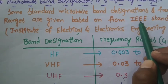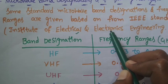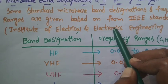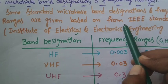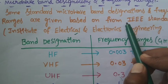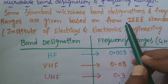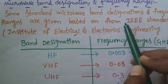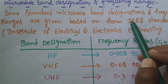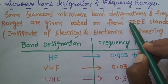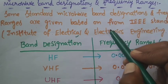The full form of IEEE is the Institute of Electrical and Electronics Engineering. This is very important for an ECE student to know, because most every standard in electronics is given based upon IEEE standards.